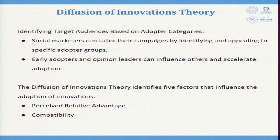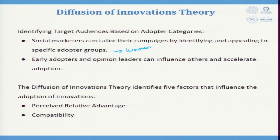Identifying target audiences based on adopter categories allows social marketers to tailor their campaigns by identifying and appealing to specific adopter groups. For example, campaigns targeting only women — requesting daughters to go to school, encouraging switching from wood-based cooking to gas-based cooking for better health, or promoting solar lanterns in the house.